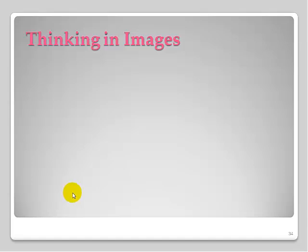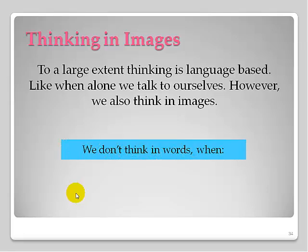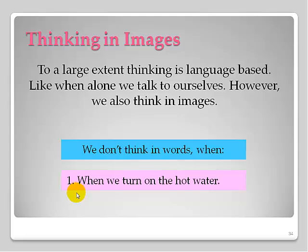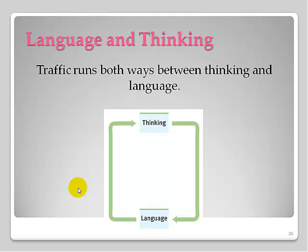So does language determine thinking? To a large extent it does — we use language when we talk to ourselves. However, we also underestimate how often we think in images. When we turn on a hot water faucet, we don't explain what's going to happen in words; we imagine what it'll feel like. When we ride a bicycle, we think in action and visualization. So there's some support for linguistic determinism, but also evidence that refutes it. Language may not determine what we think about, but it probably has a lot to do with how we think about things. Please review if necessary, and we'll discuss this in class and do some activities to apply this information.